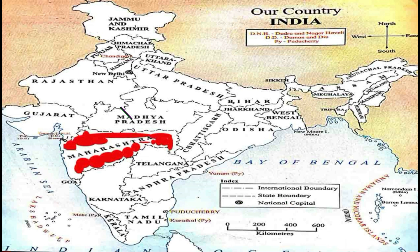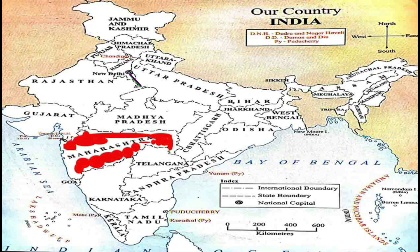Now see the state boundaries — between two states there are boundary lines, indicating the separation of states. Our national capital is New Delhi, denoted by a circle as shown in the index. It is very important to see the index first so you can understand the map easily. In this map, we have to color our state — we have already colored our state boundary with red. Our state is Maharashtra.